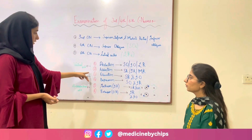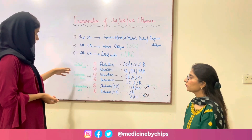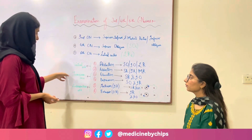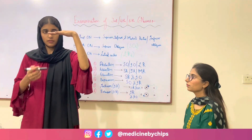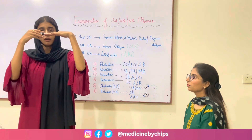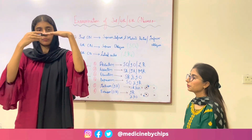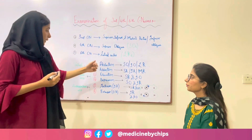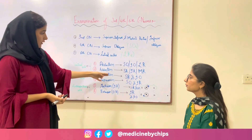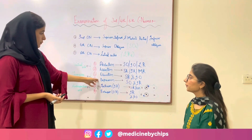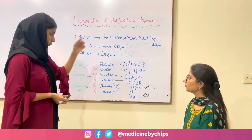The next two movements, elevation and depression, are performed along the transverse axis. The movement above is elevation and below is depression. Elevation is performed by the superior rectus and inferior oblique. Depression is performed by the superior oblique and inferior rectus.